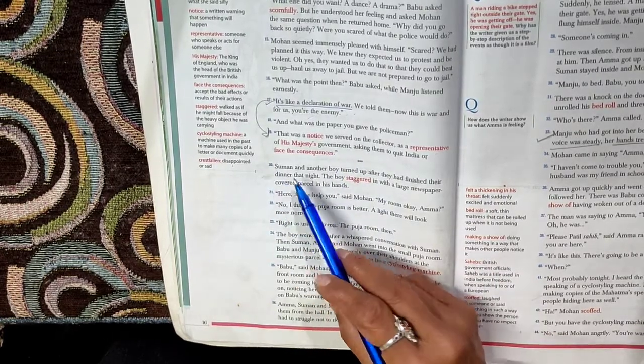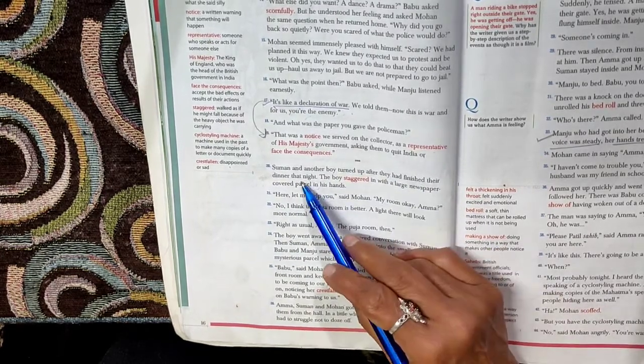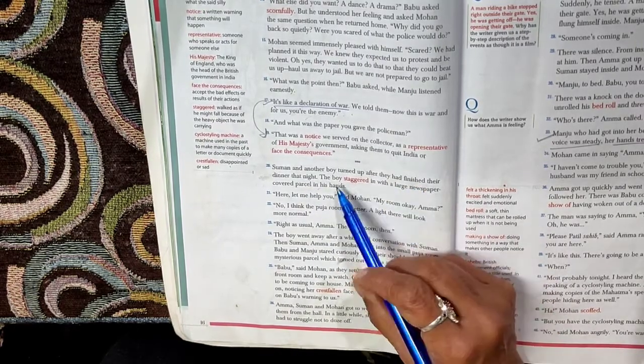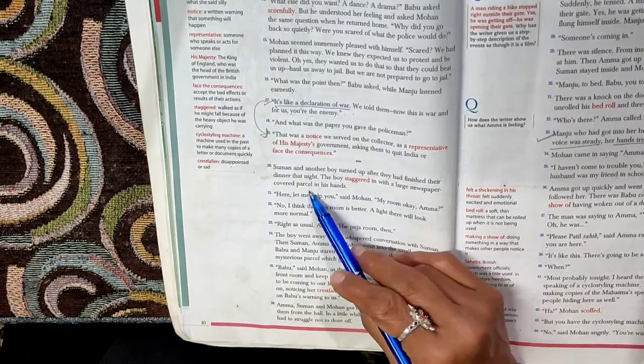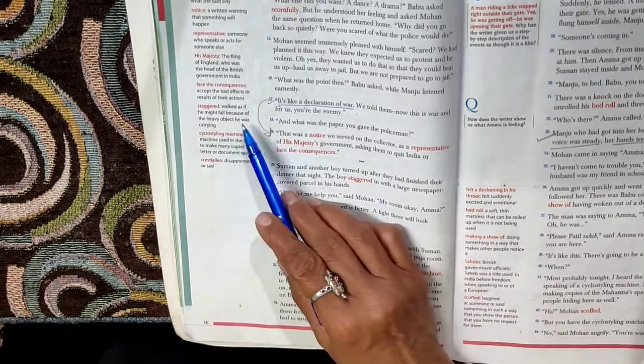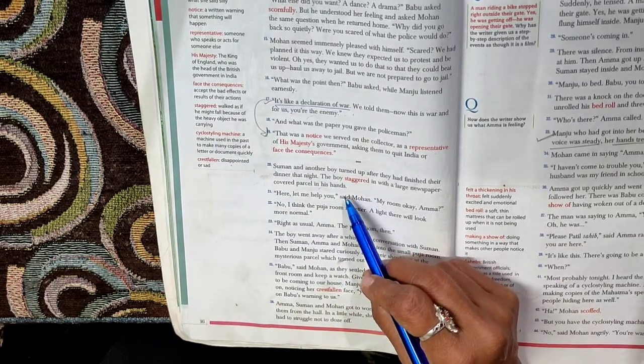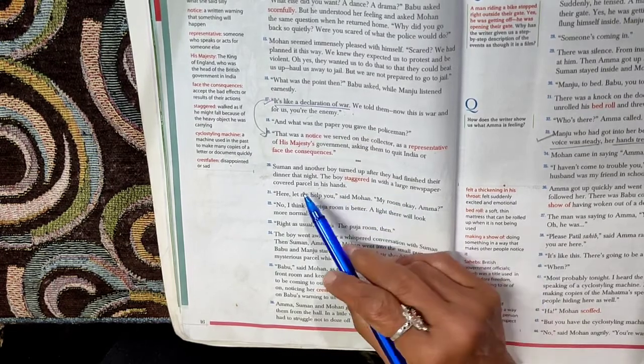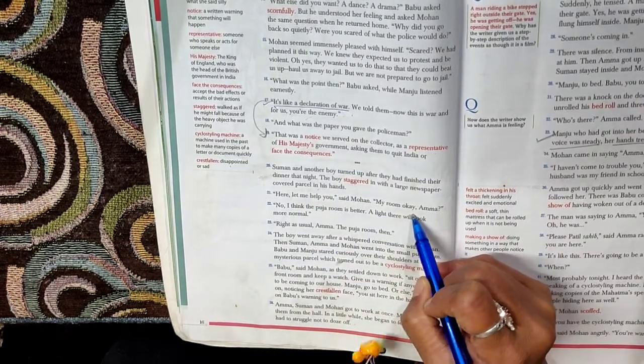Para 20. Suman and another boy turned up after they had finished their dinner that night. After the dinner was over, Suman came with another boy. The boy staggered in with a large newspaper covered parcel in his hands. Staggered means walked as if he might fall because of the heavy object he was carrying. Here, let me help you, said Mohan. My room, okay, Amma?